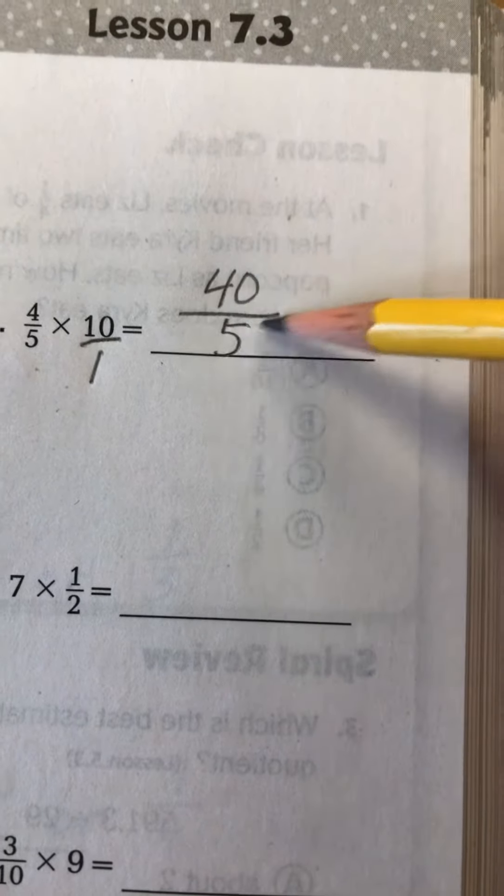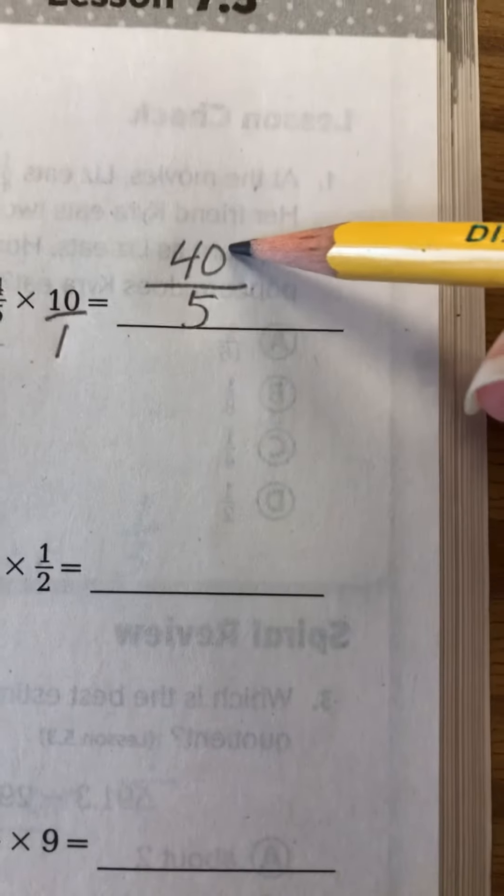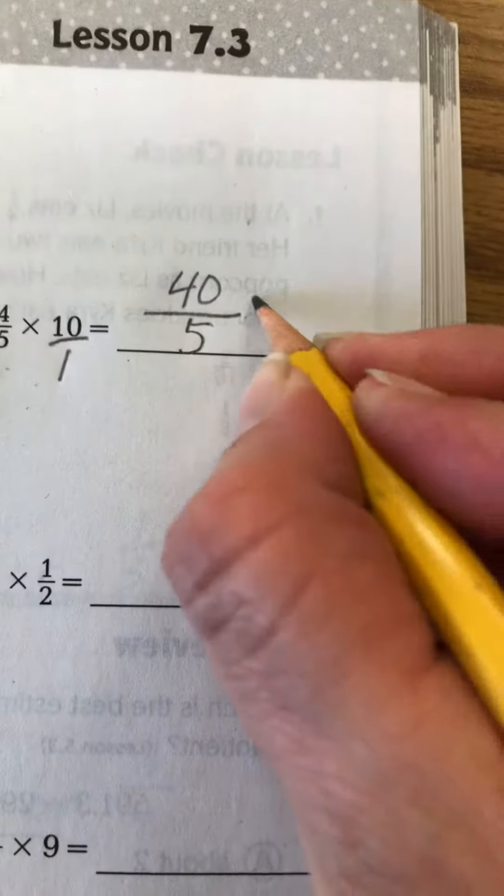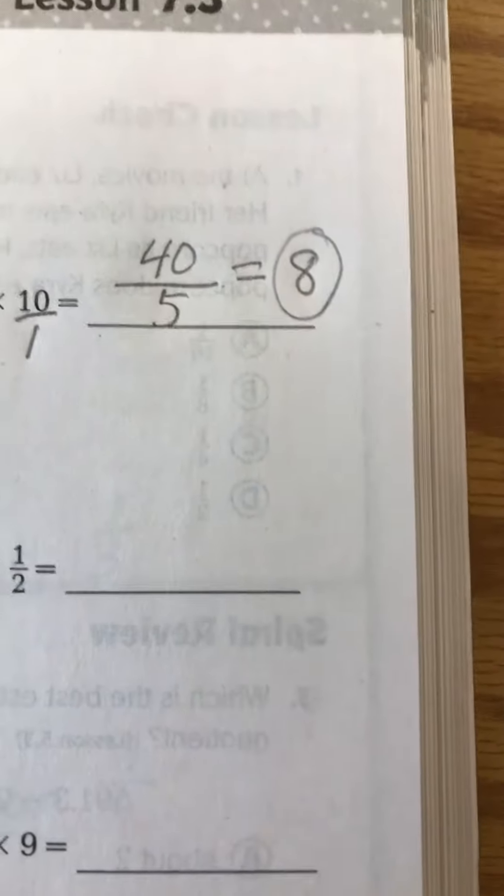A fraction line is really a division bar. Fractions are a division. So 40 divided by 5 equals 8. So 8 is our answer for this one.